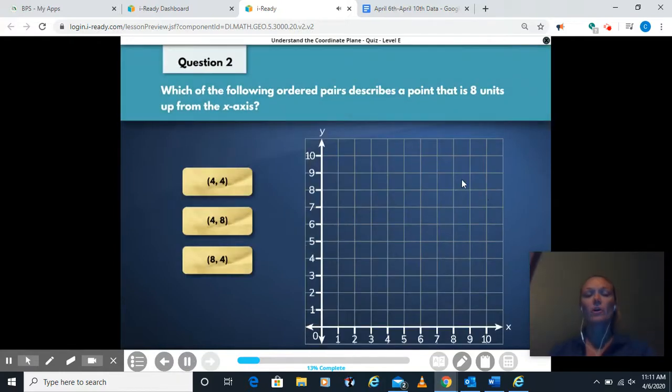Which of the following ordered pairs describes a point that is 8 units up from the x-axis? This one's a little bit tricky, because first we go over, and then we go up. So our number that's up is actually our y. Remembering that our first number here is our x, our second number is our y.